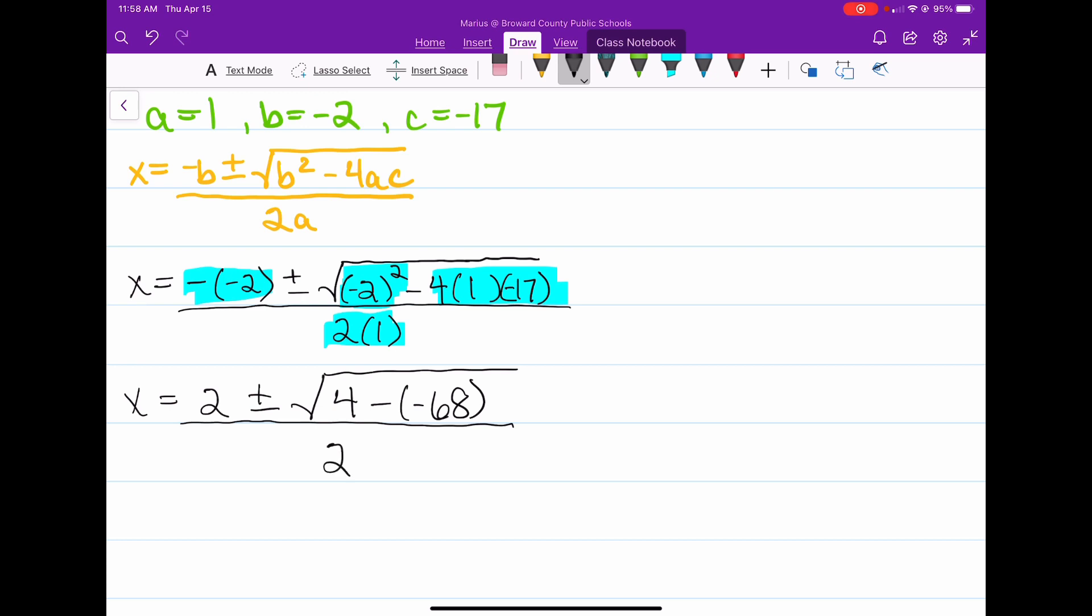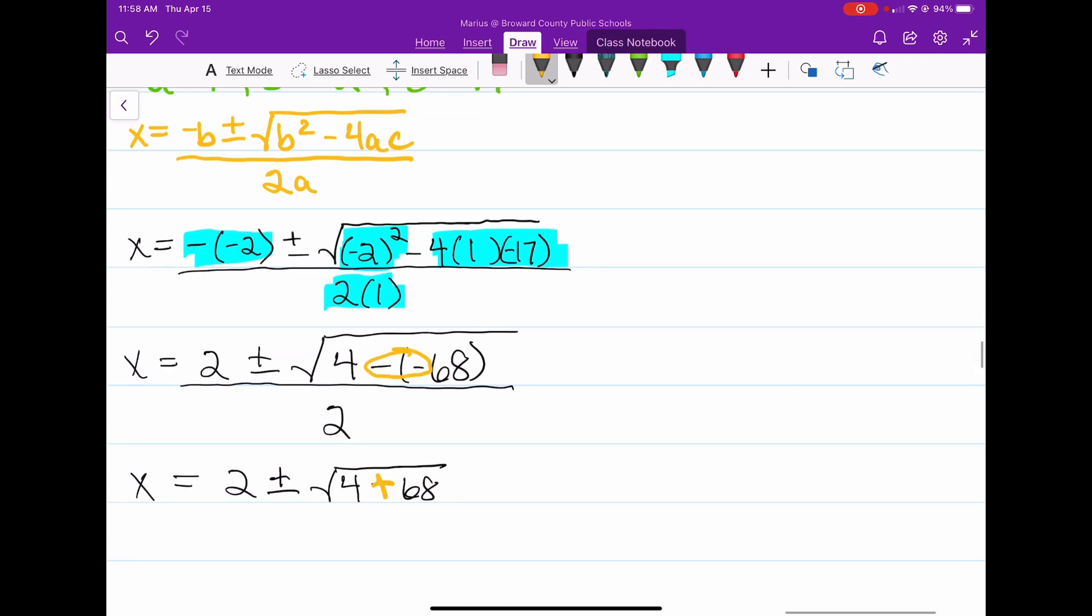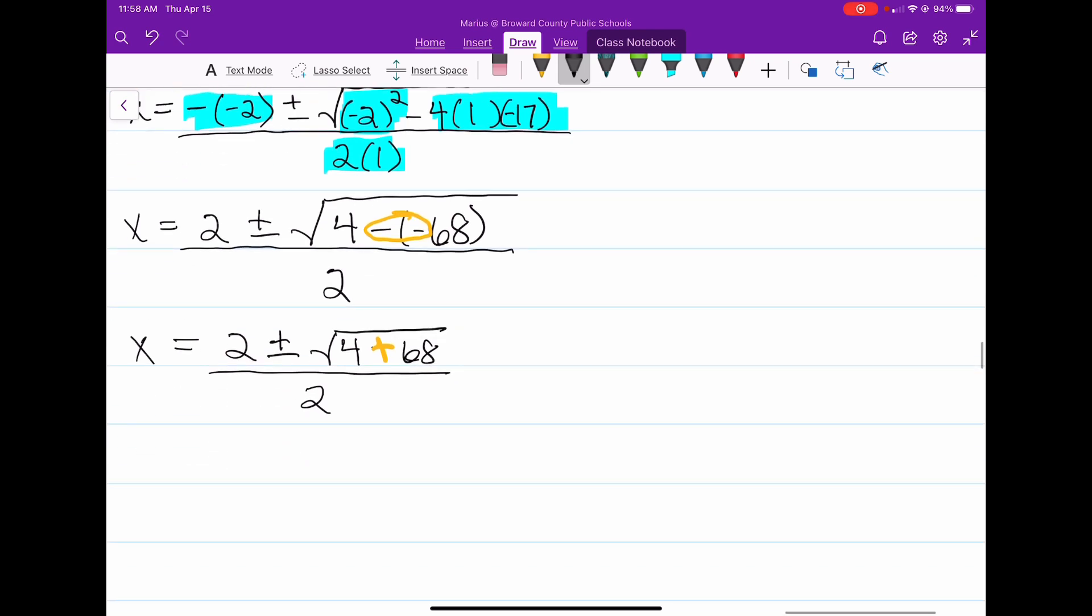Now we're going to continue. So we have x equals 2 plus or minus the square root of 4 plus 68. So right here we have to change this. We have double negative, it changes to a plus sign, and everything is still divided by positive 2. So now, if we keep working, we get x equals 2 plus or minus the square root of 72, and all of that is going to be divided by 2.